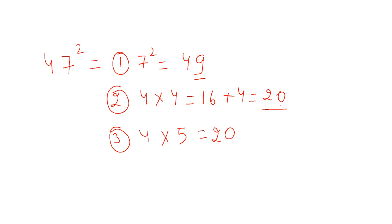The final answer will be: from here we take 9, from here we take 0. 2 is carried forward and will get added to this number, so 20 plus 2 will become 22. So 2209 is our final answer.